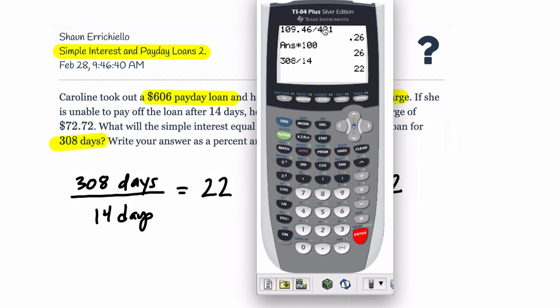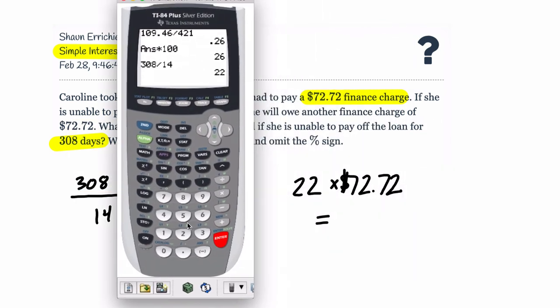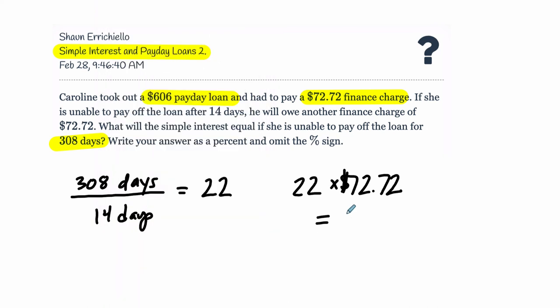And this is where it really starts to add up. So 22 times, almost a full year, $72.72, equals $1,599.84.